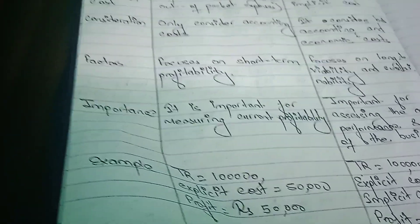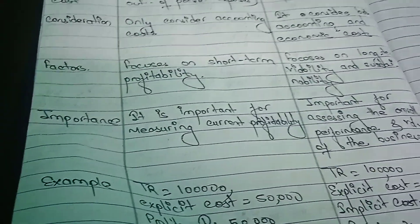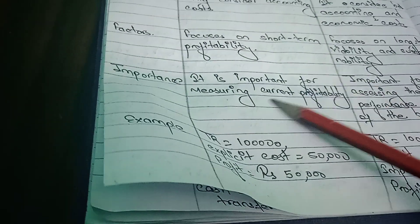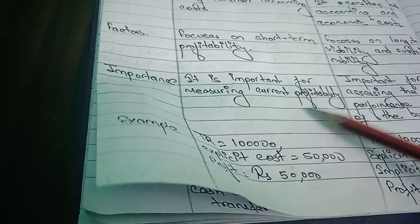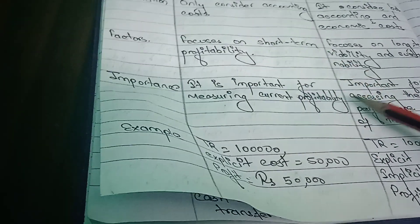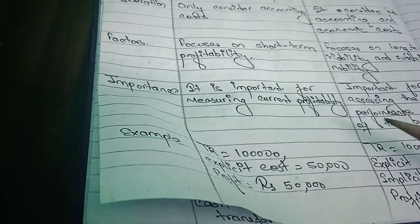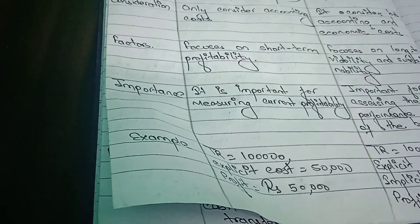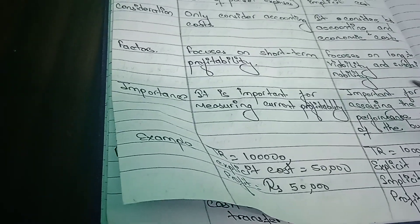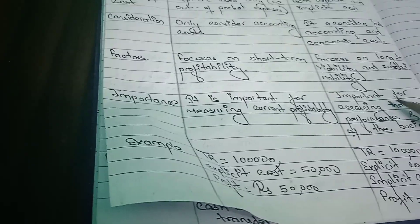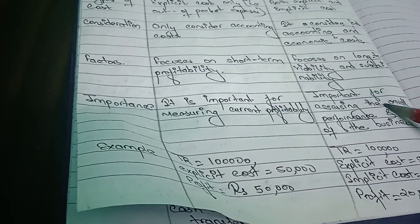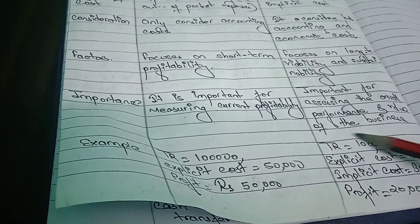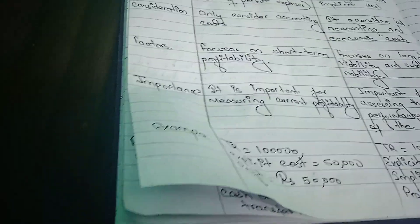Implicit and explicit costs are both considered in economic profit. Business profit is important for measuring current profitability, while economic profit is important for assessing the overall performance and value of the business in the long run.